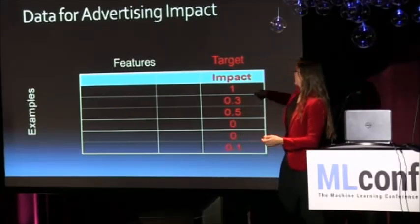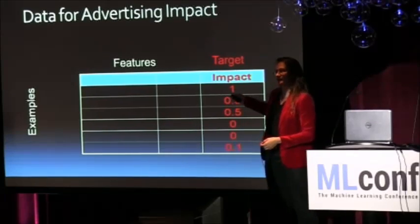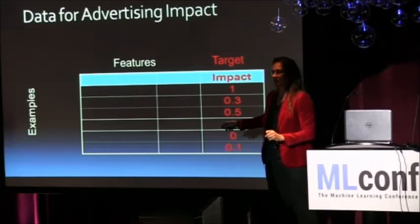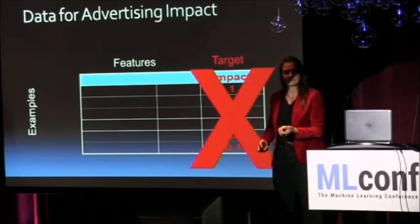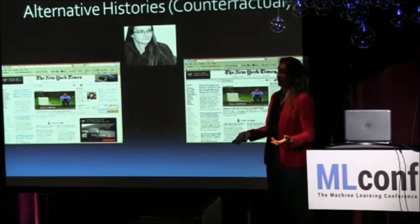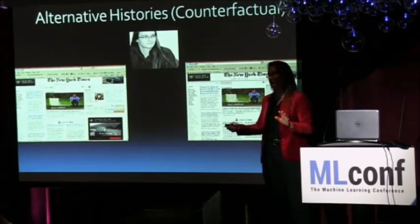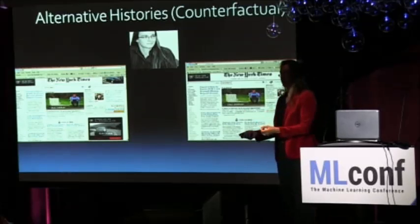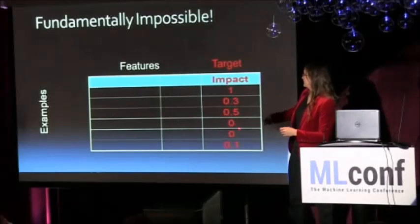How about this as a target variable: predict who is most affected by seeing the ad. This is not even a matter of big data or expensive data — it's philosophically impossible, because you can never measure the impact on a single person. Either you show me the ad or you don't, but you can't have it both ways unless you have a time machine. You will never be able to observe the target variable you're really interested in here.